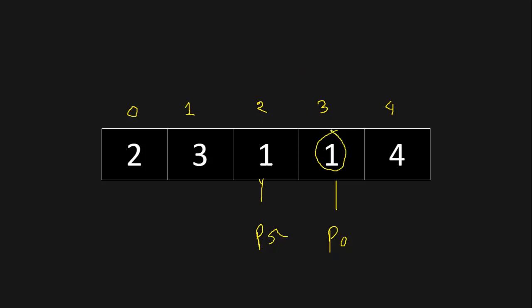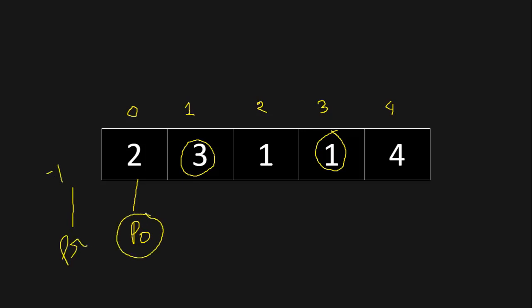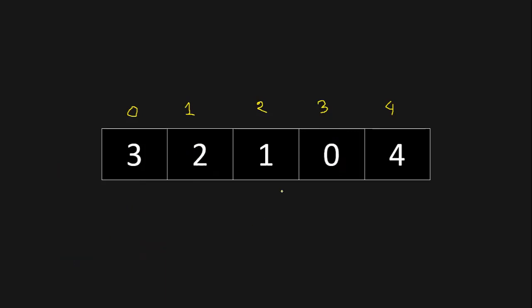We find the difference again: 3 minus 2 equals 1. The value at position is greater than or equal to 1, so we move both pointers left. Again, 2 minus 1 equals 1, and the value at position is 1, so 1 is greater than or equal to 1 — move left. Then 1 minus 0 equals 1, and the value is 3, so 3 is greater than or equal to 1 — move left. Now position points to index 0 and prev points to minus 1. Whenever position points to index 0, we can reach the last index, so we return true.